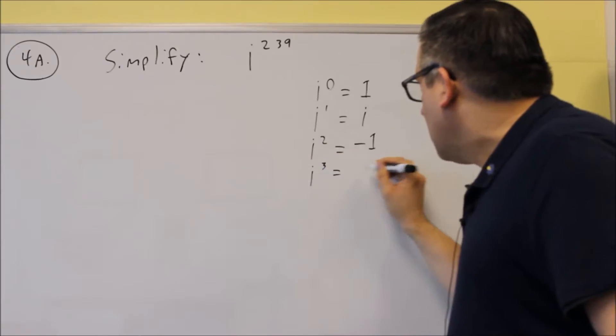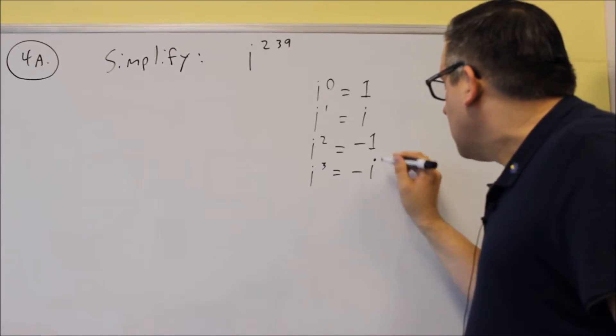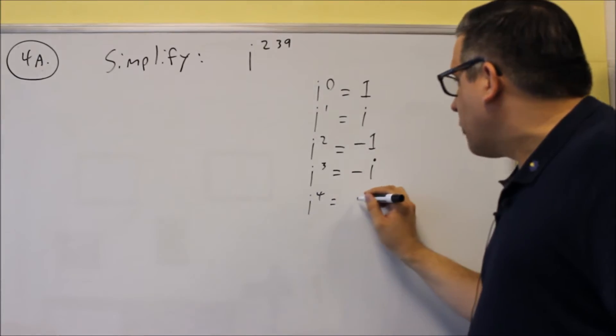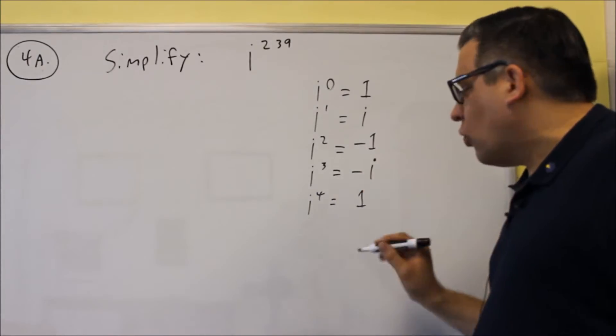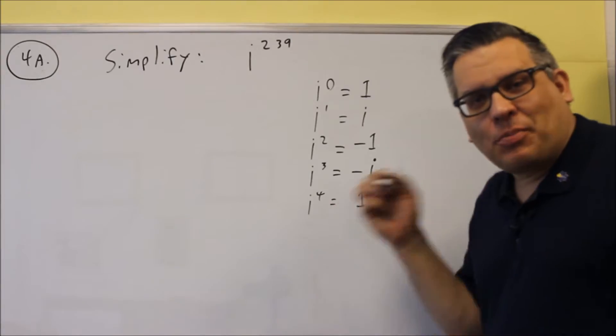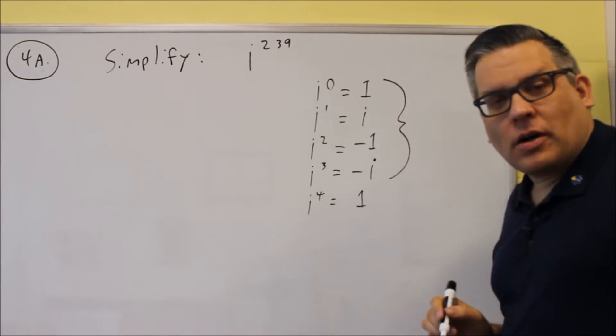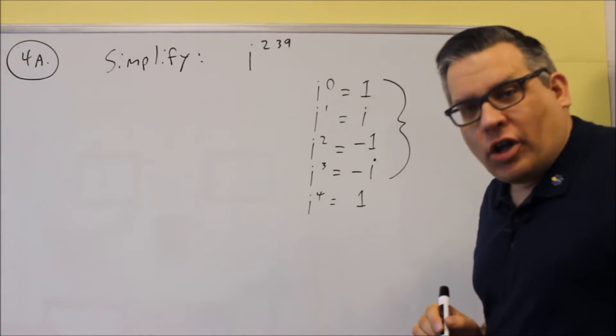i cubed, you'll get negative i. Now, if you were to go and do i to the 4th power, you would get back down to 1 again, and what would happen is the pattern keeps repeating. So you've got this block of 4 that keeps repeating over and over again.